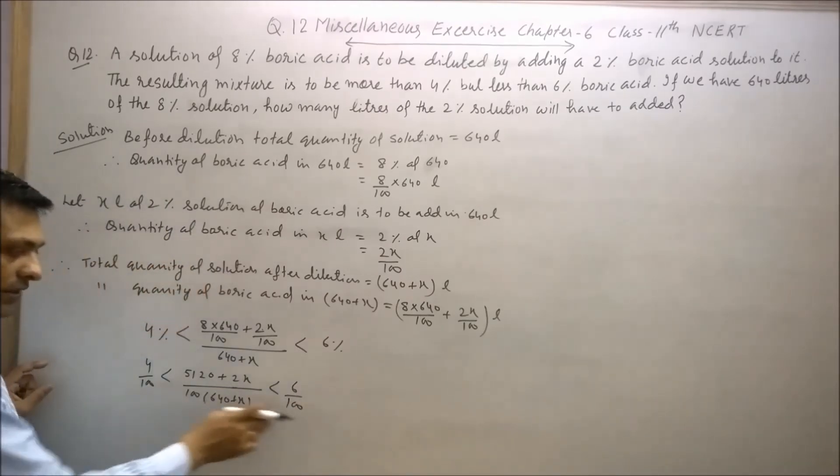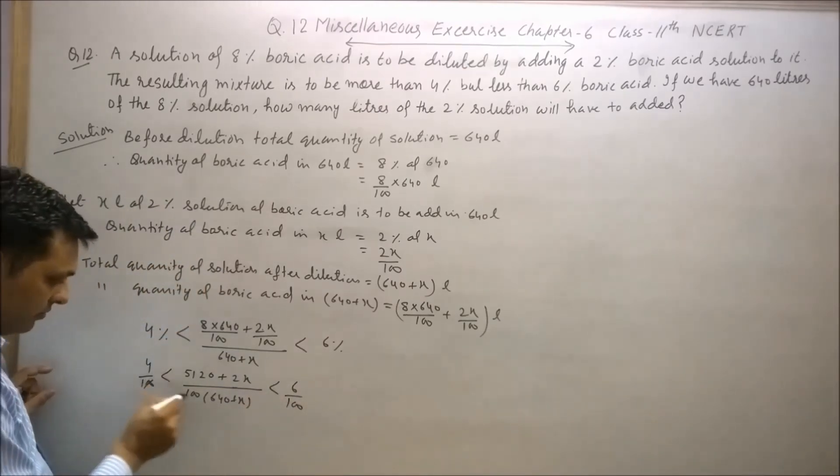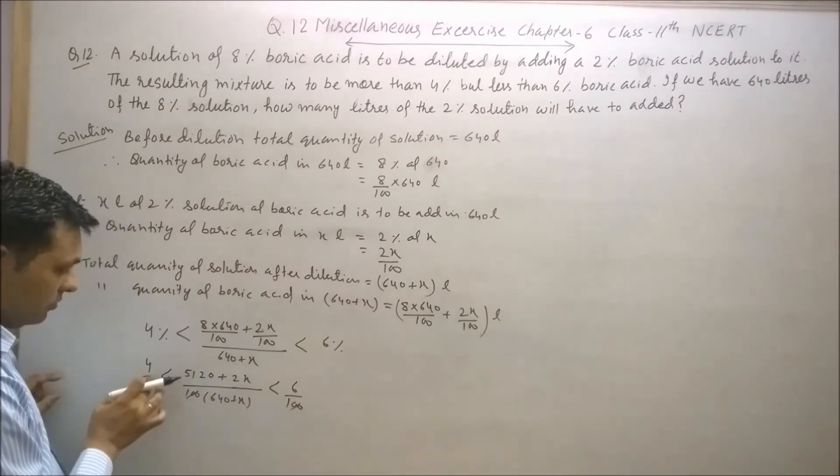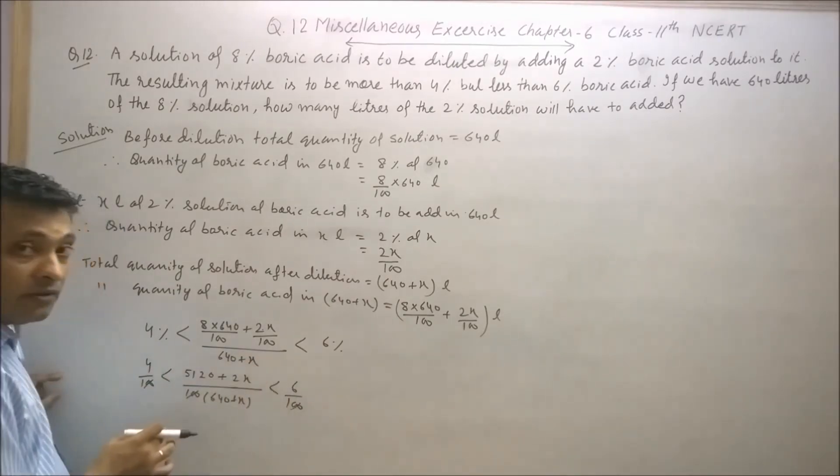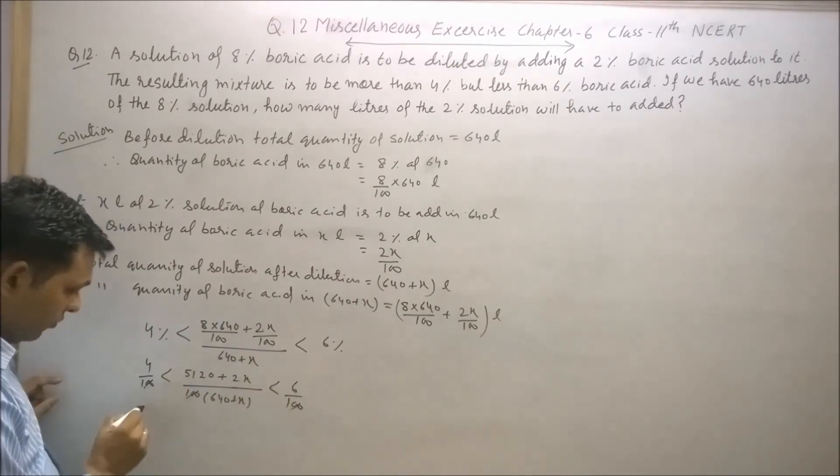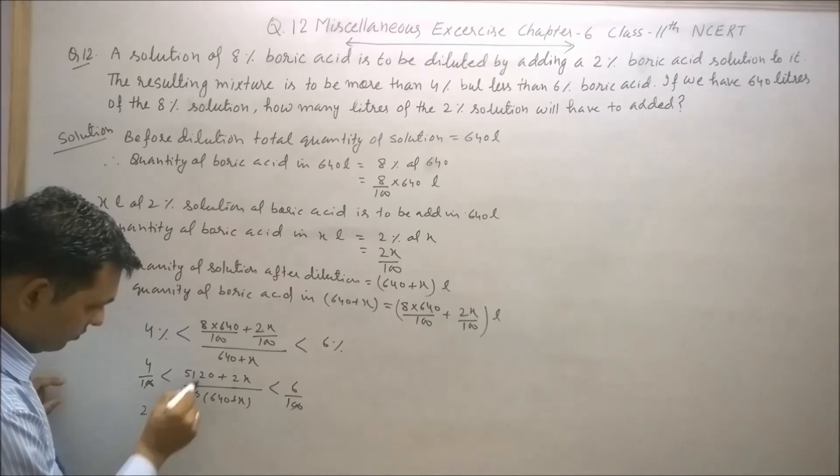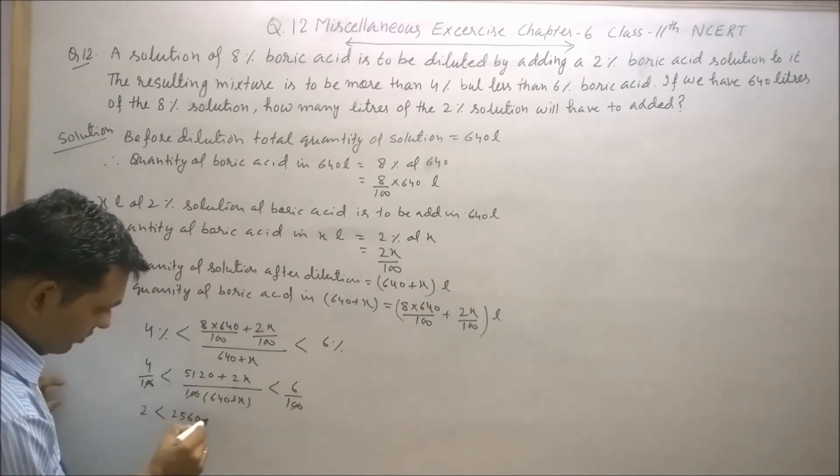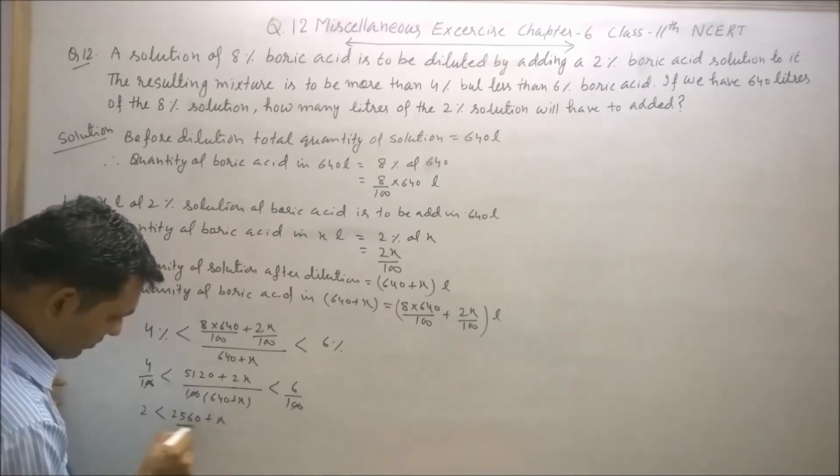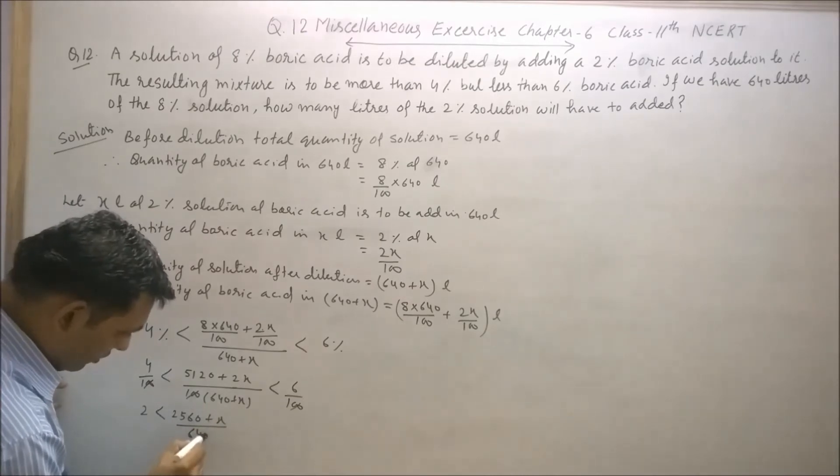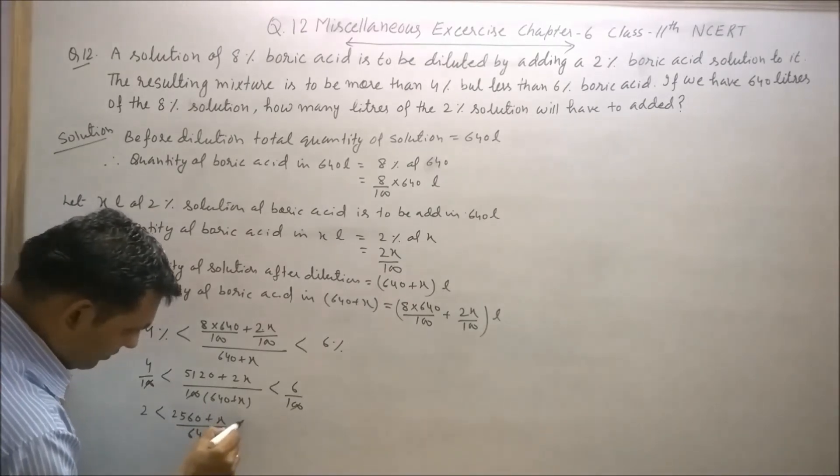Now reduce each side by 100. Also, each part is reduced by 2. Therefore, 2 is less than [2560 + x] divided by [640 + x], which is less than 3.